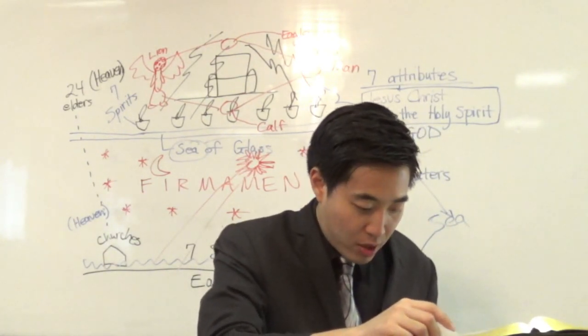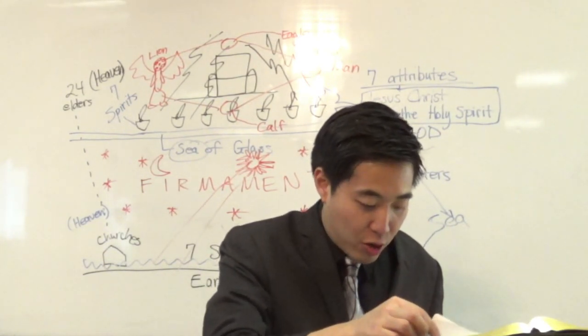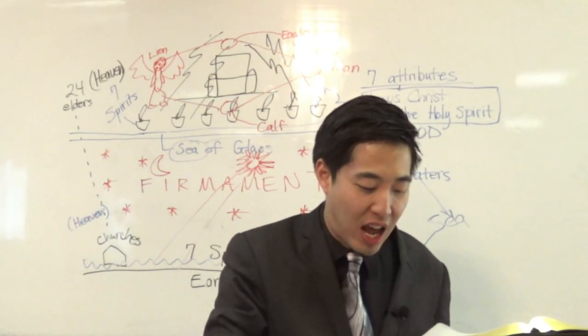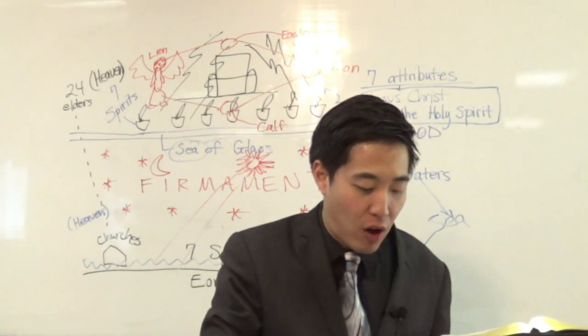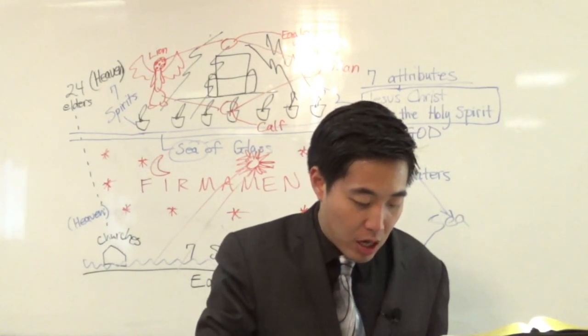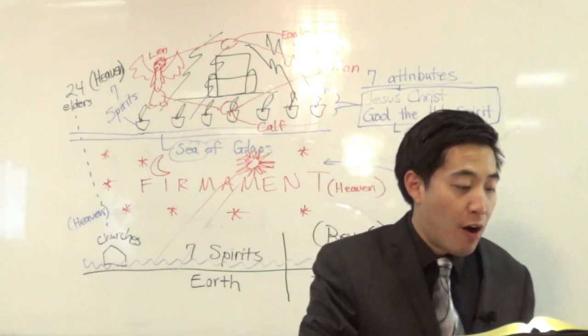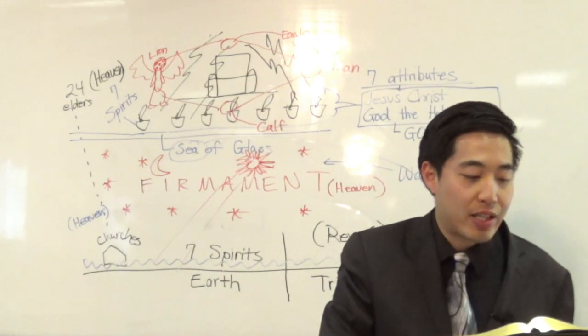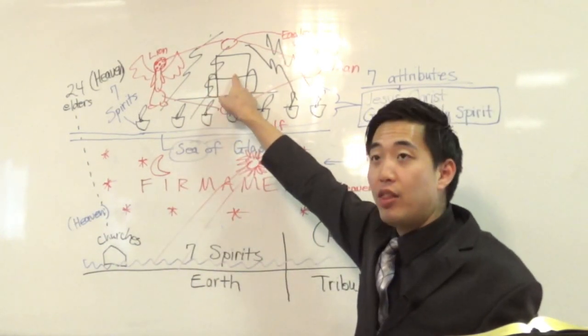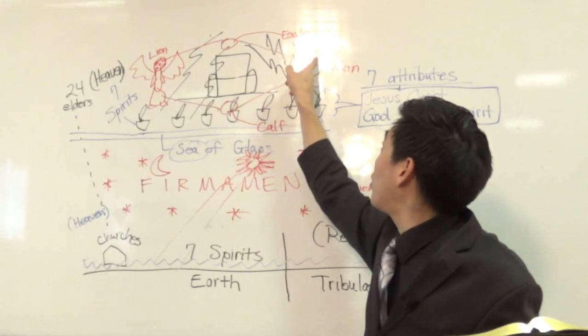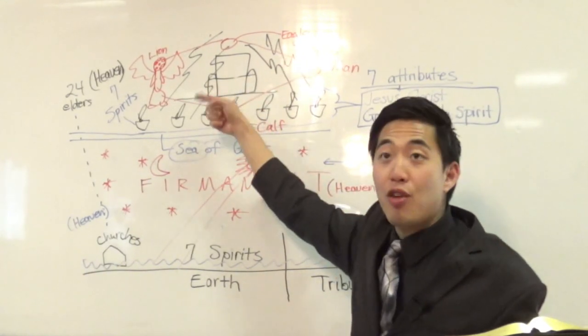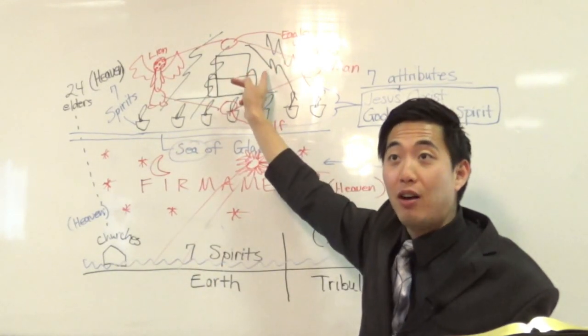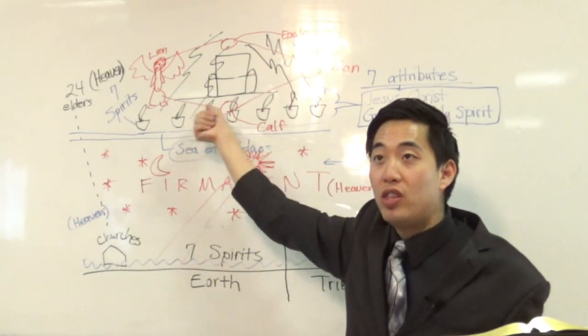Let's keep reading right here. Notice, And under the firmament were their wings straight, the one toward the other. Everyone had two which covered on this side. Everyone had two which covered on that side their bodies. Verse 25, And there was a voice from the firmament that was over their heads. Remember, John, he said he heard a voice. There was a voice. I wrote it down there. Voices out of the throne. Ezekiel's down here, and he says somewhere up there, there's a voice coming out. There is no doubt. This is the same thing.